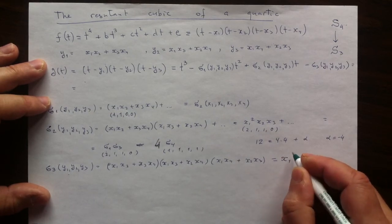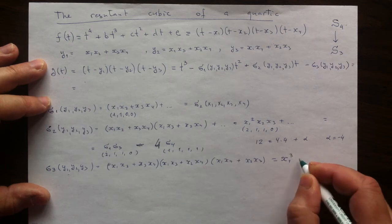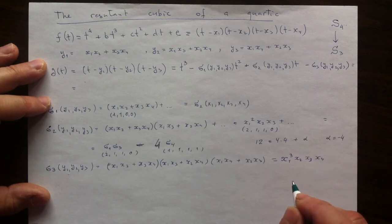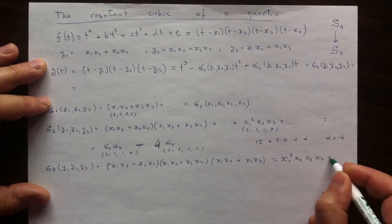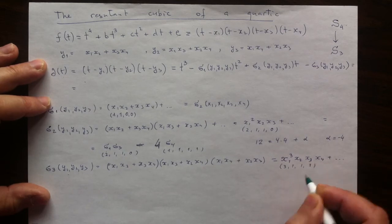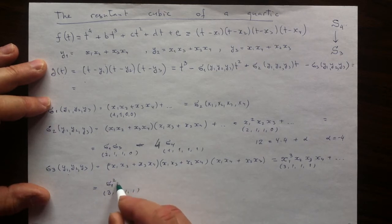This is the leading term of the first factor, leading term of the second, leading term of the third. Overall, x1 power is going to be 3, x2 and x3 and x4 are coming as linear. So the vector of the powers is 3 and 1 and 1 and 1.